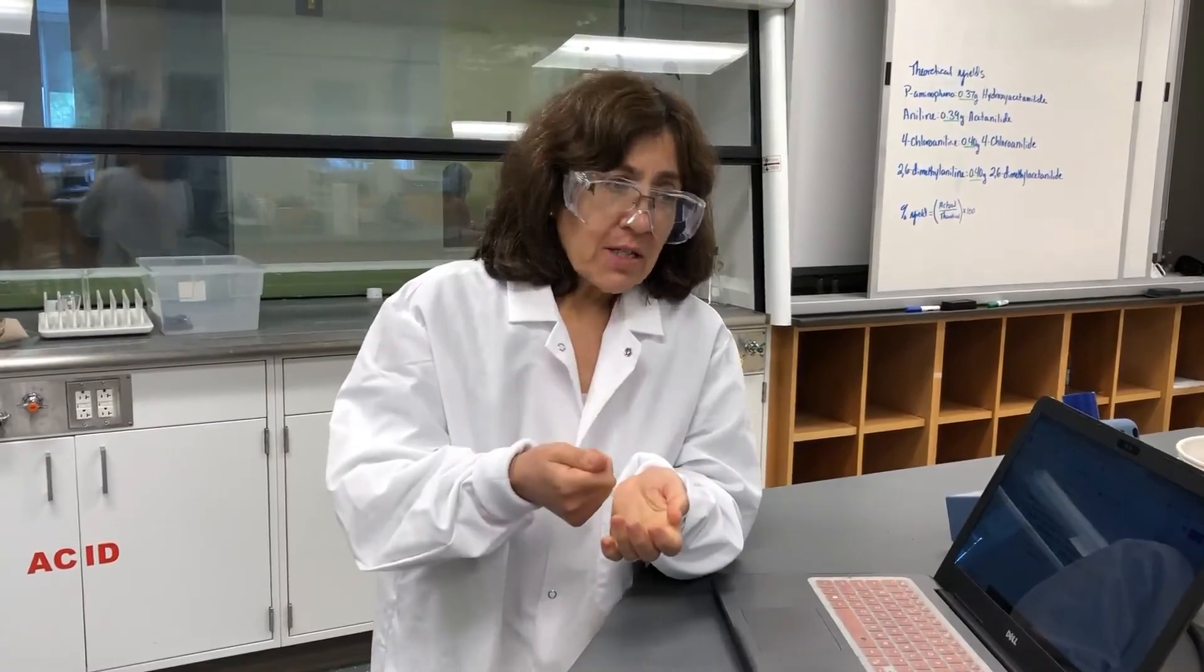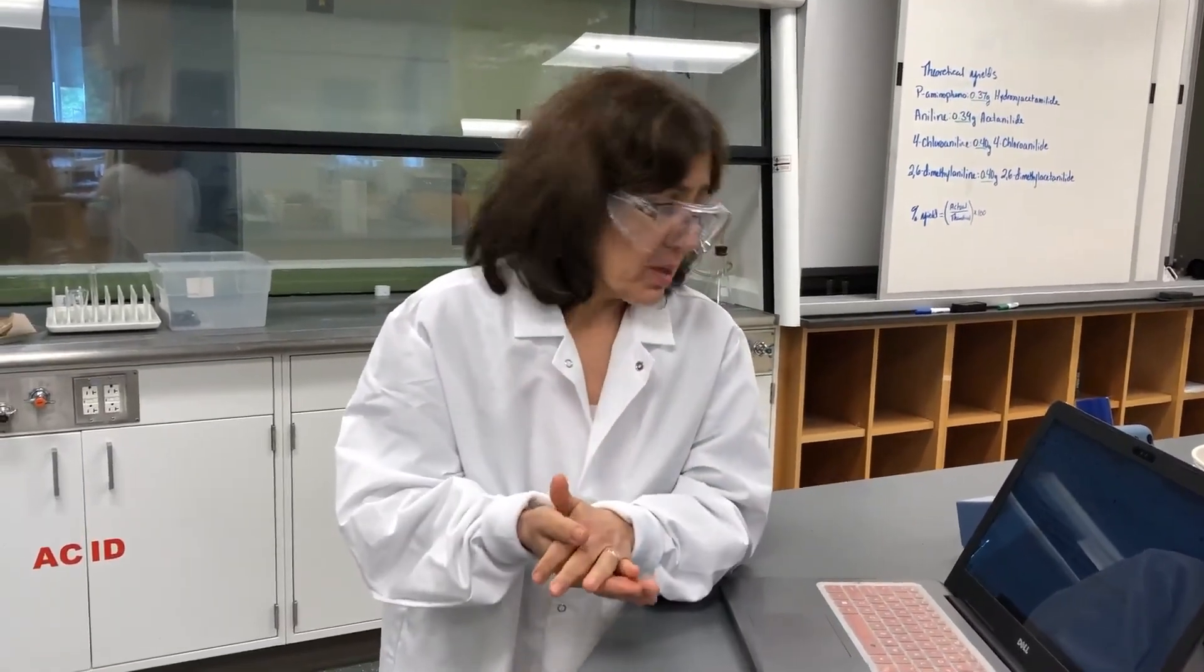When you're venting the sep funnel, you should always point it away from you while you're in the hood. The stopcock on the sep funnel should be tight, and it should be in the closed position when you're adding liquid to the sep funnel. Otherwise, if it's open, everything you put in will just spill out the bottom.